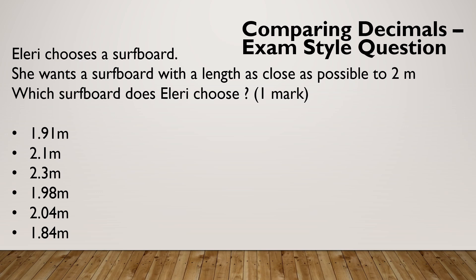Let's look at one last example. Eleri chooses a surfboard. She wants a surfboard with a length as close as possible to 2 metres. Which surfboard does Eleri choose? Pause and give it a go. Hopefully you chose 1.98. Don't forget to add your zeros. 2.1 is the same as saying 2.10. 2.3 is the same as saying 2.30. So this one is only 0.02 away from 2 metres, whereas 2.1 is the most common incorrect answer, and that's a whole one-tenth away.